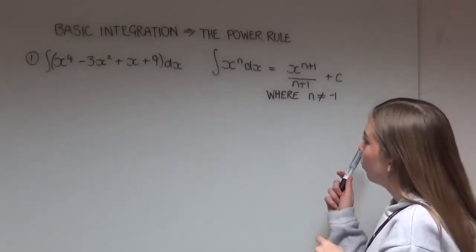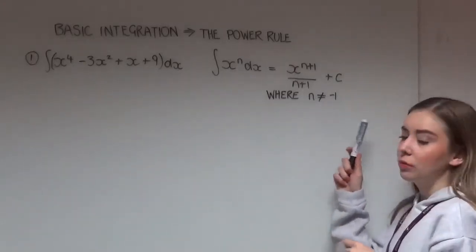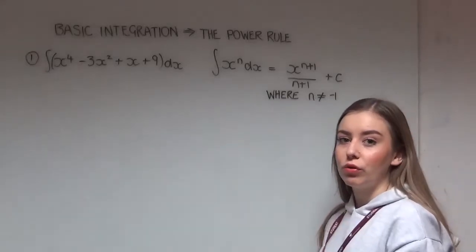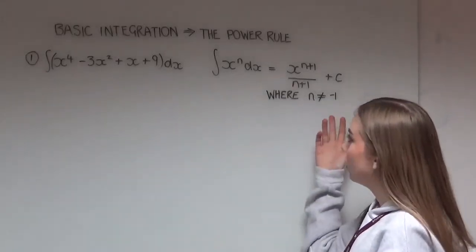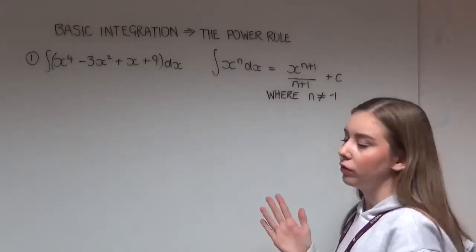This power rule works when n is not equal to minus 1. So n could be 4, 0, or minus 3, it doesn't matter just as long as it's not minus 1, because we have a different rule for that which we'll cover in a later video.